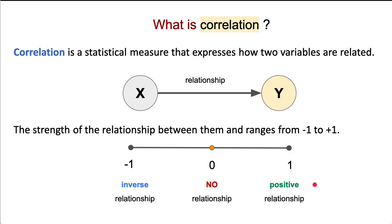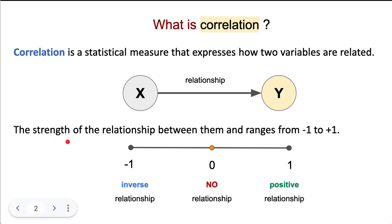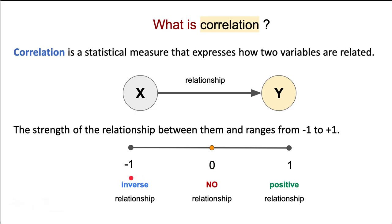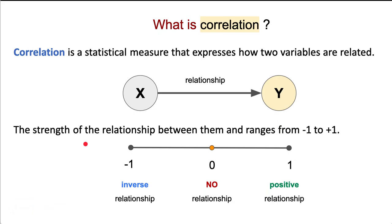One is a positive relationship and minus one is an inverse relationship, but it's the same strength. It's like a mirror — on one side you have one, on the opposite side you have minus one. It's not less because it's negative; it's just in the opposite direction. The mountain is the same height, but you have the path up and the path down.